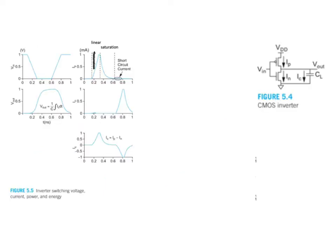Now that we understand the scenarios where we should optimise for energy and where we should optimise for power, let us take a look at where energy is consumed and where power is dissipated in the computational operation of digital logic gates. We take, for example, the most elementary gate, which is our NOT gate or inverter, which is comprised of a PMOS transistor in series with an NMOS transistor, as shown in this circuit diagram.